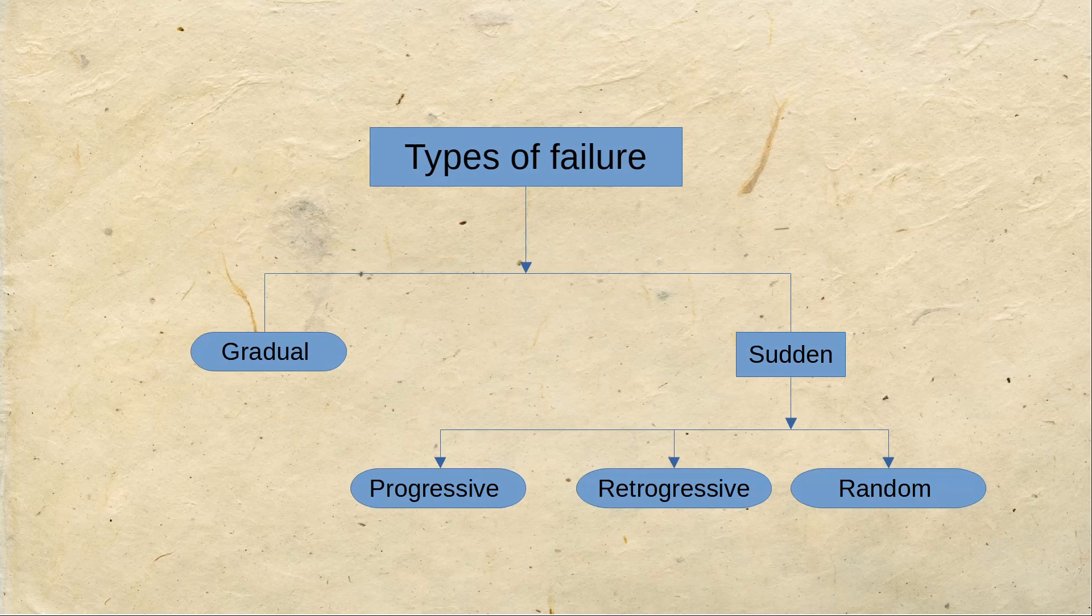Let's look at the types of failures. There are two types: gradual and sudden. In sudden failures you have three kinds. One is progressive where as you keep using the equipment the chances of failure go up, the probability of failure goes up. This is very true with automobiles. As you keep using your car or bike for a longer time the chances of sudden failure of any component go up.